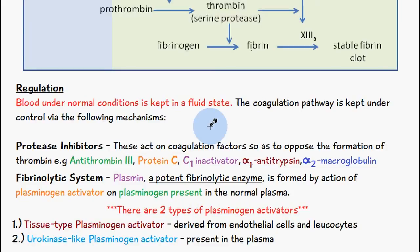Welcome to Five Minute School. This video is a quick follow-up on the last video on the coagulation system. We already know we have three pathways: the intrinsic pathway, the extrinsic pathway, and when those two meet at the formation of factor 10a, we then have the common pathway, which results in fibrin as the end product.